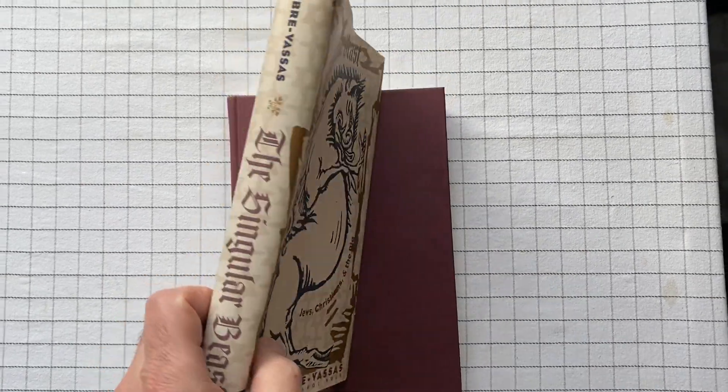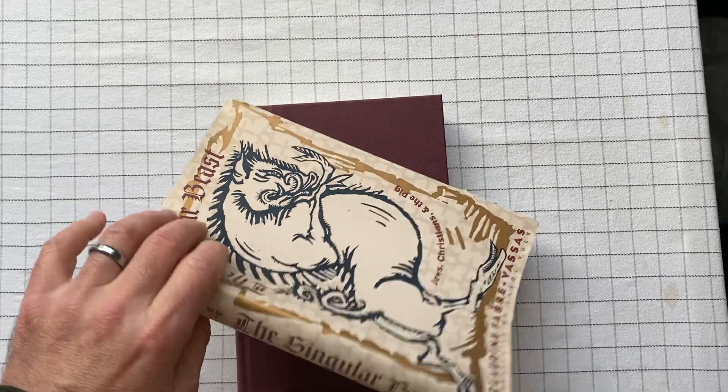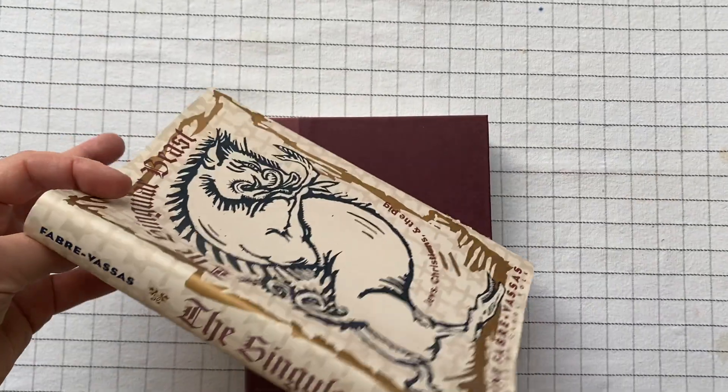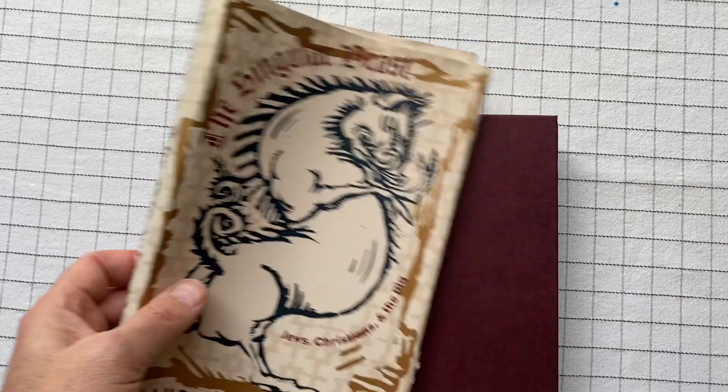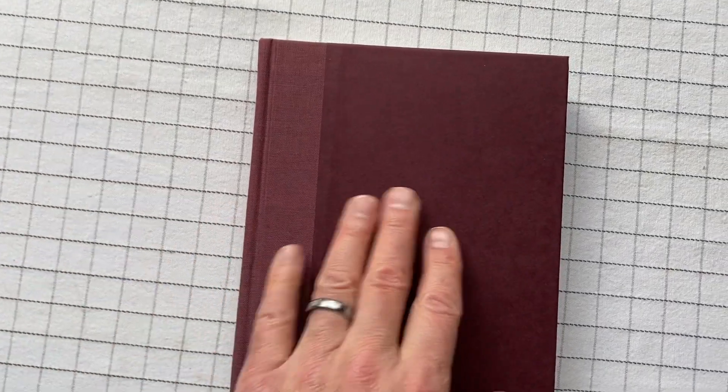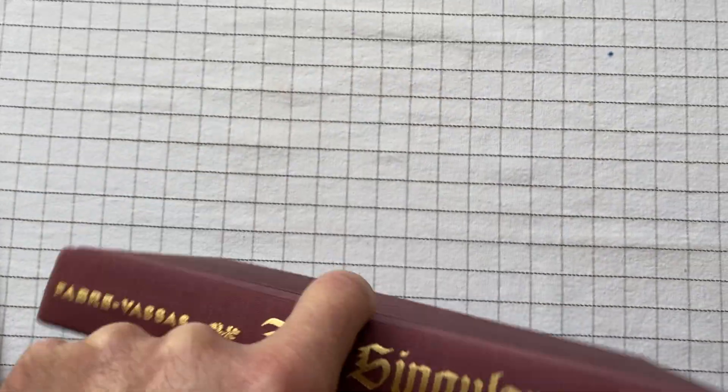This is a dust jacket. That's a pig! I like the color. It's got this burgundy paper sides with quarter-bound cloth here. Nice texture to it. Solid book.